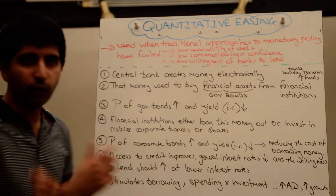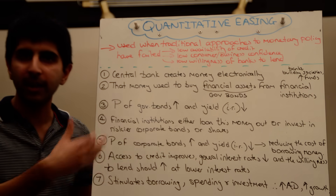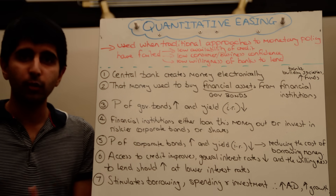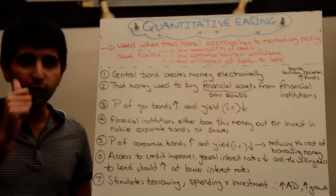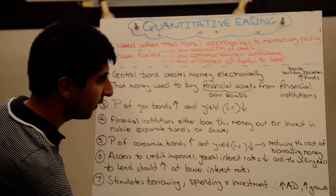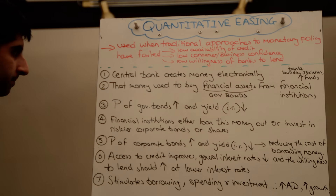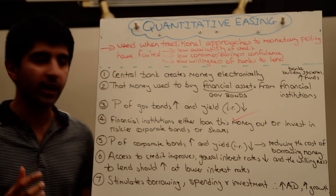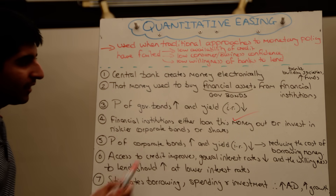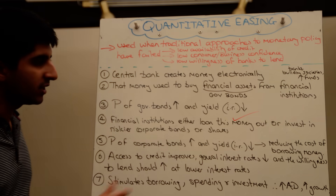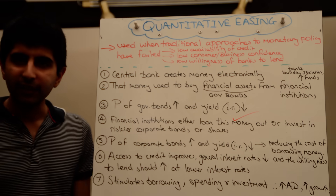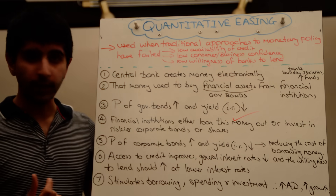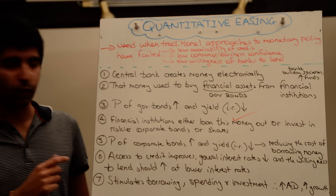So now these financial institutions that have got bucket loads of cash delivered by the Bank of England in buying up these government bonds have choices to make. They can either use this cash and straightaway repackage it and deliver loans out to individuals — which is fantastic and the direct intention of QE. But more likely, because banks will still be unwilling to lend at this stage, financial institutions will instead invest this money somewhere else.